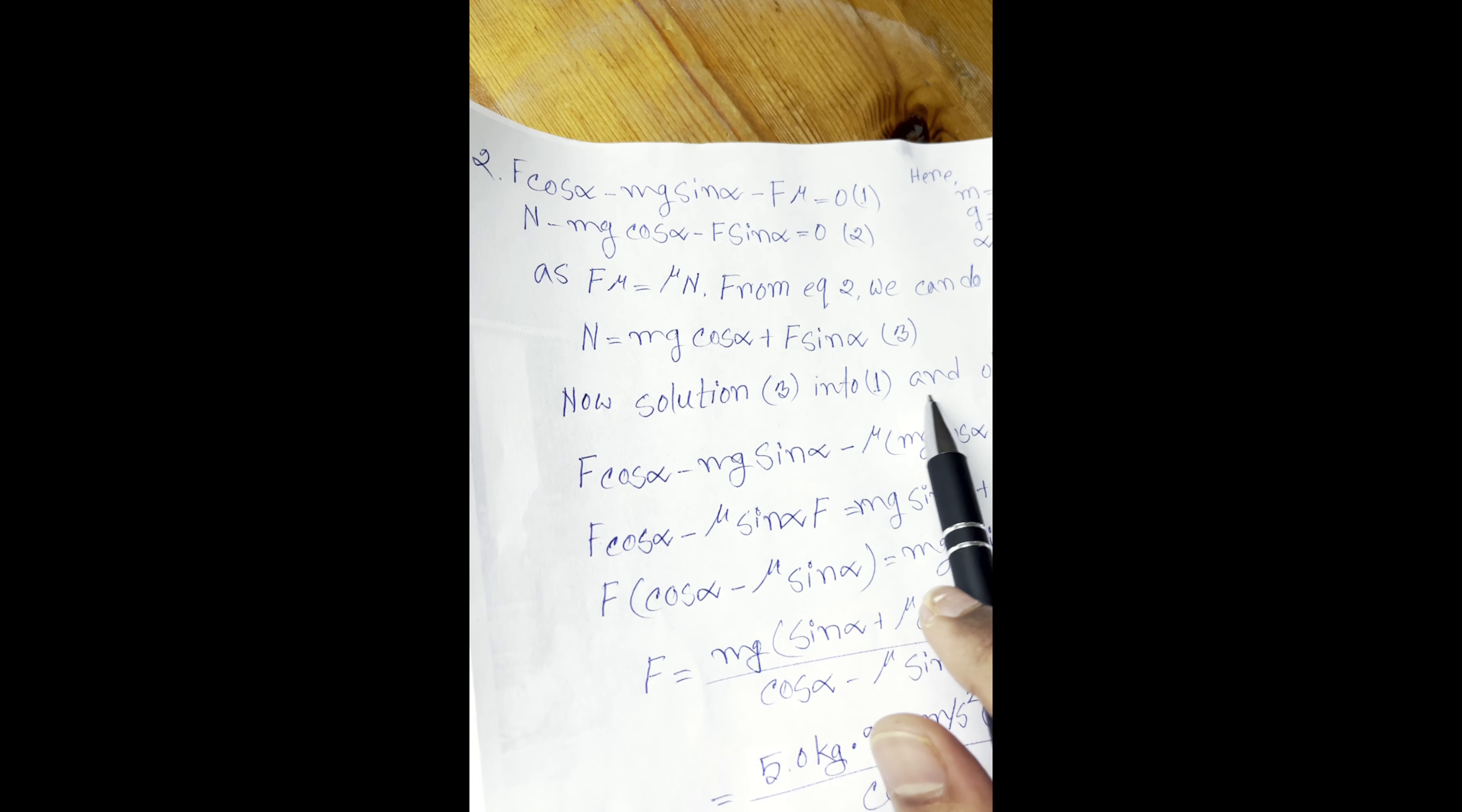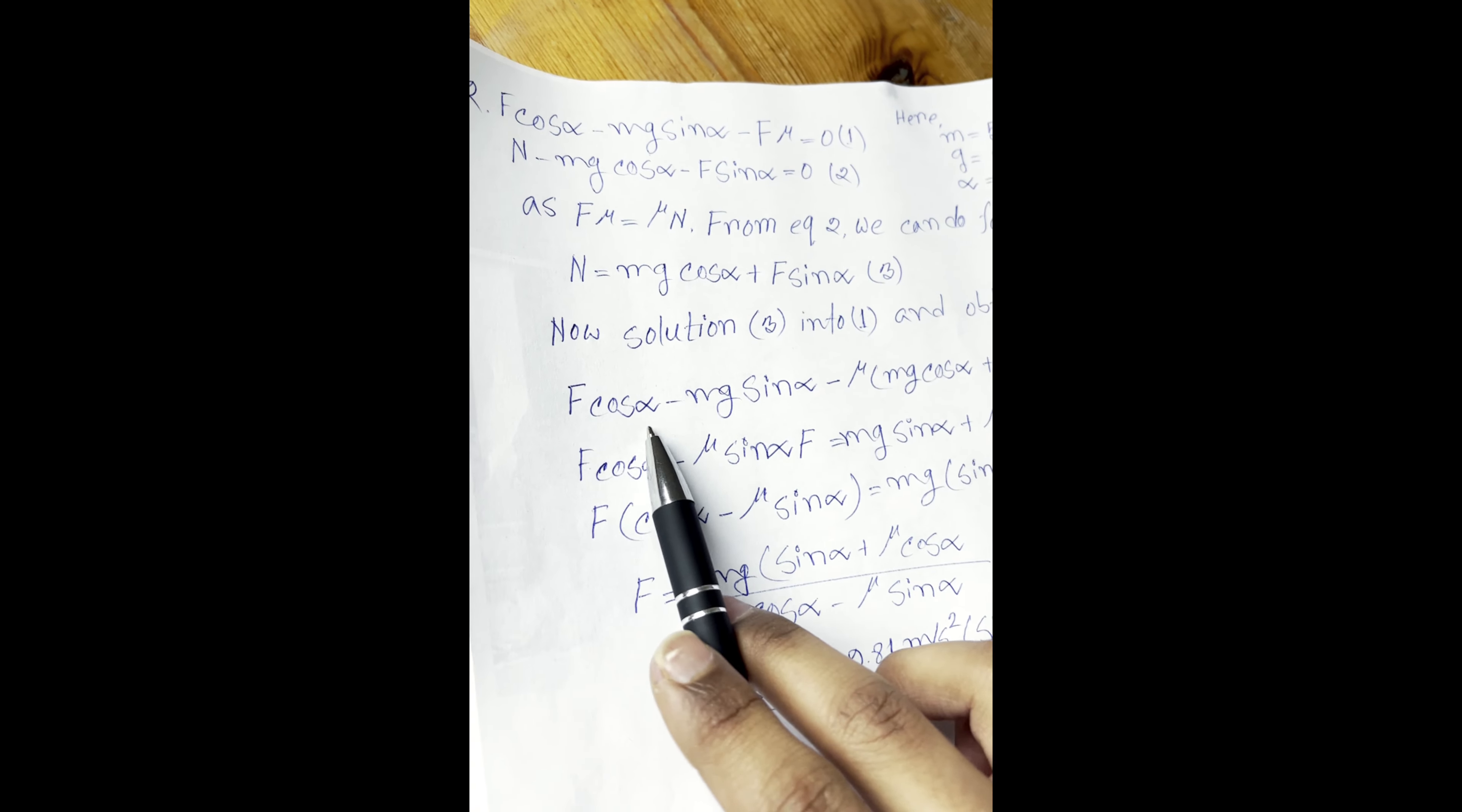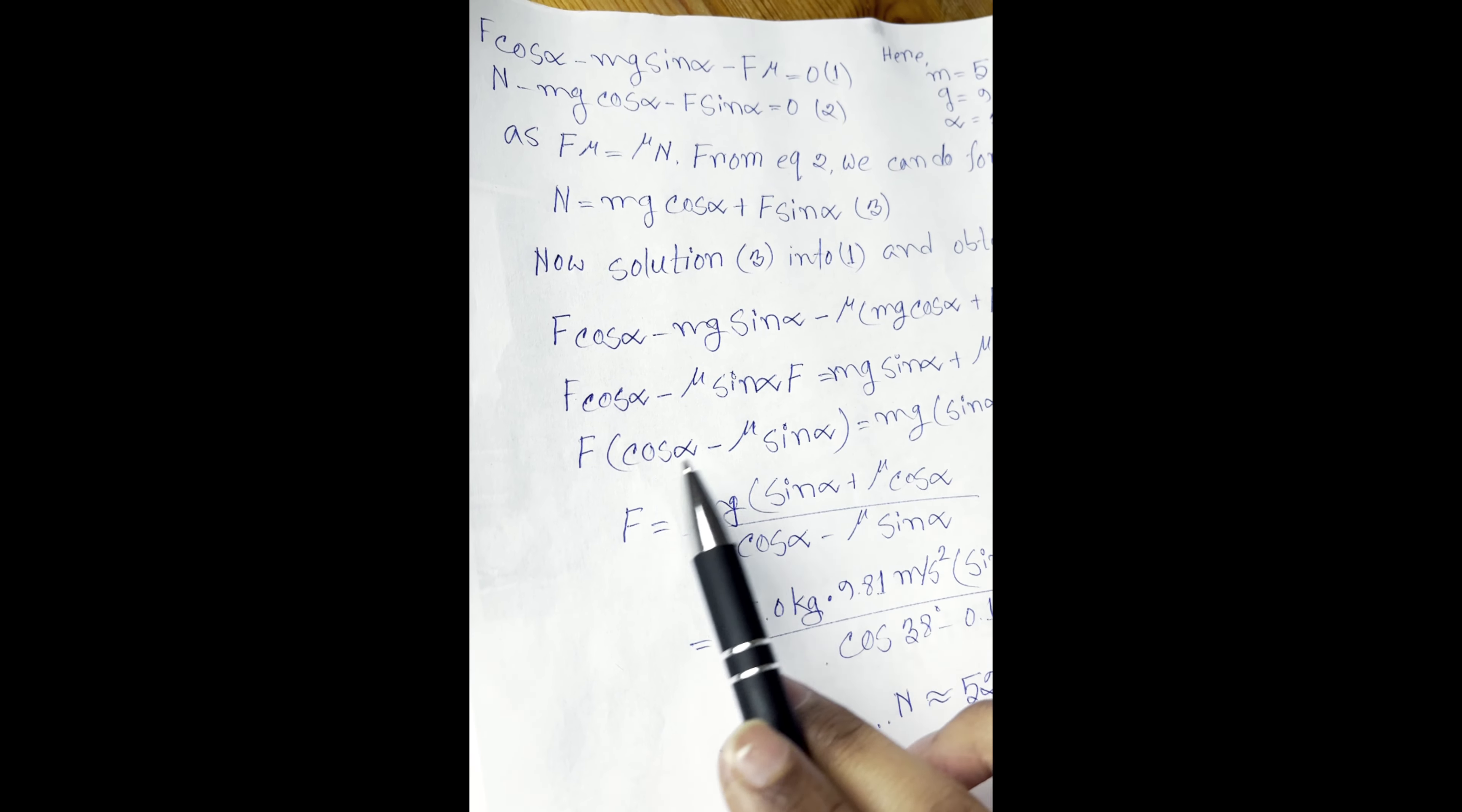Now we are solving number three from equation number three into one: F cos θ minus mg sin θ minus mu mg cos θ plus mu F sin θ equal to zero. We take sin θ to this side and mg to that side, we convert this and we are calculating the F value.